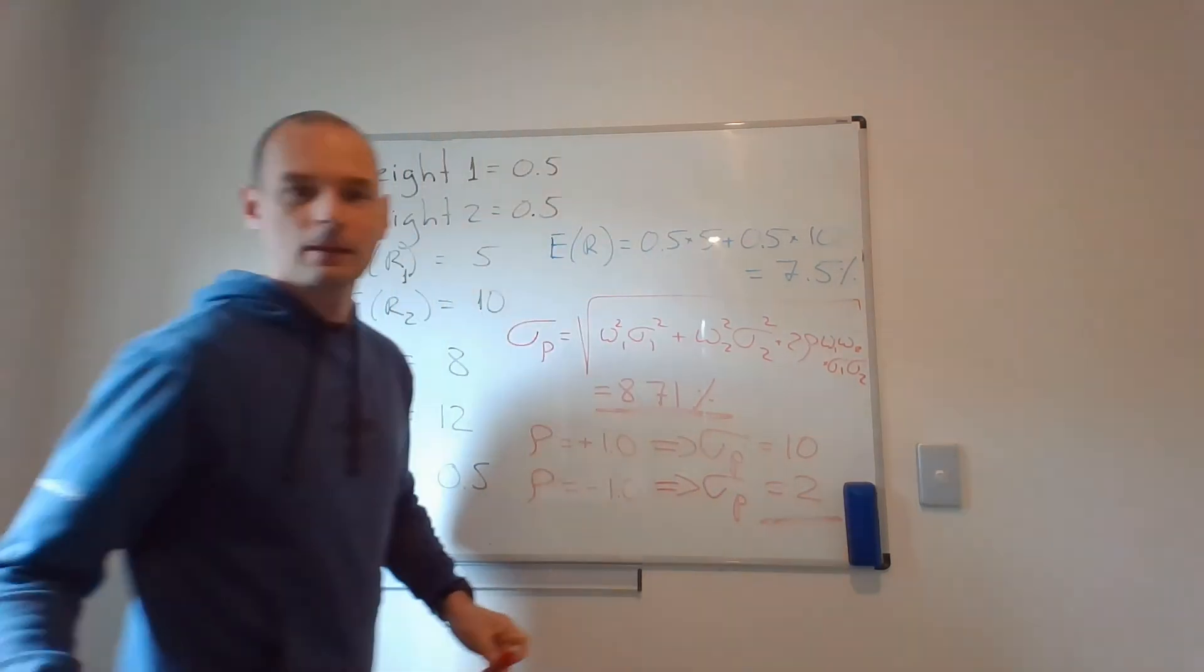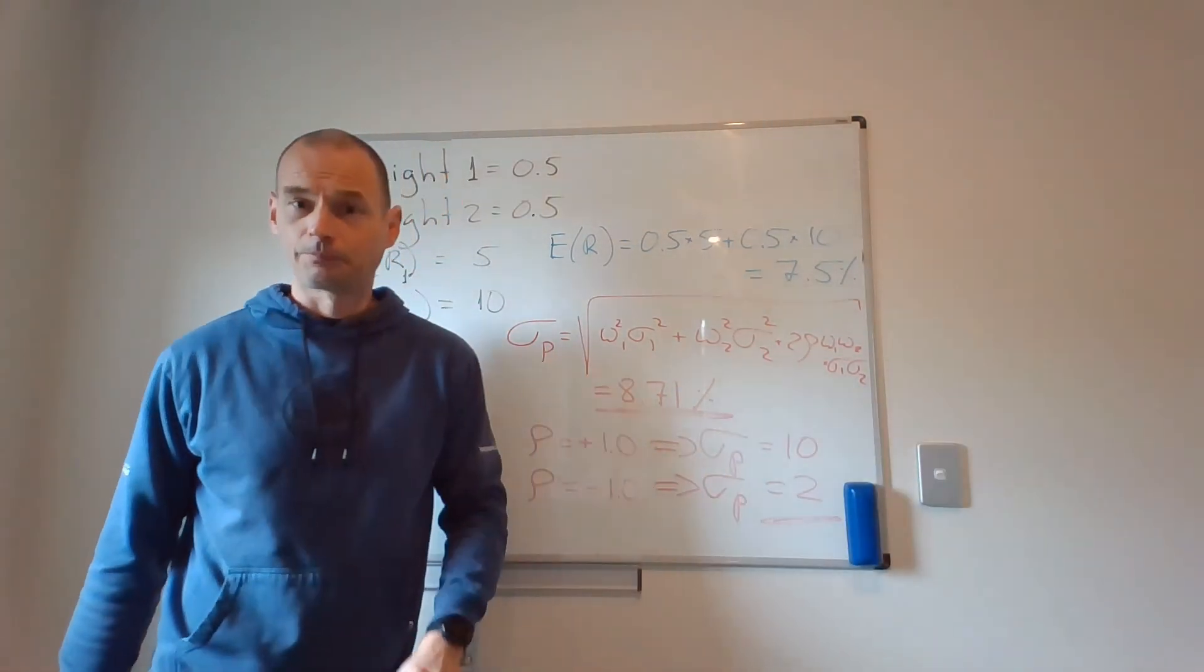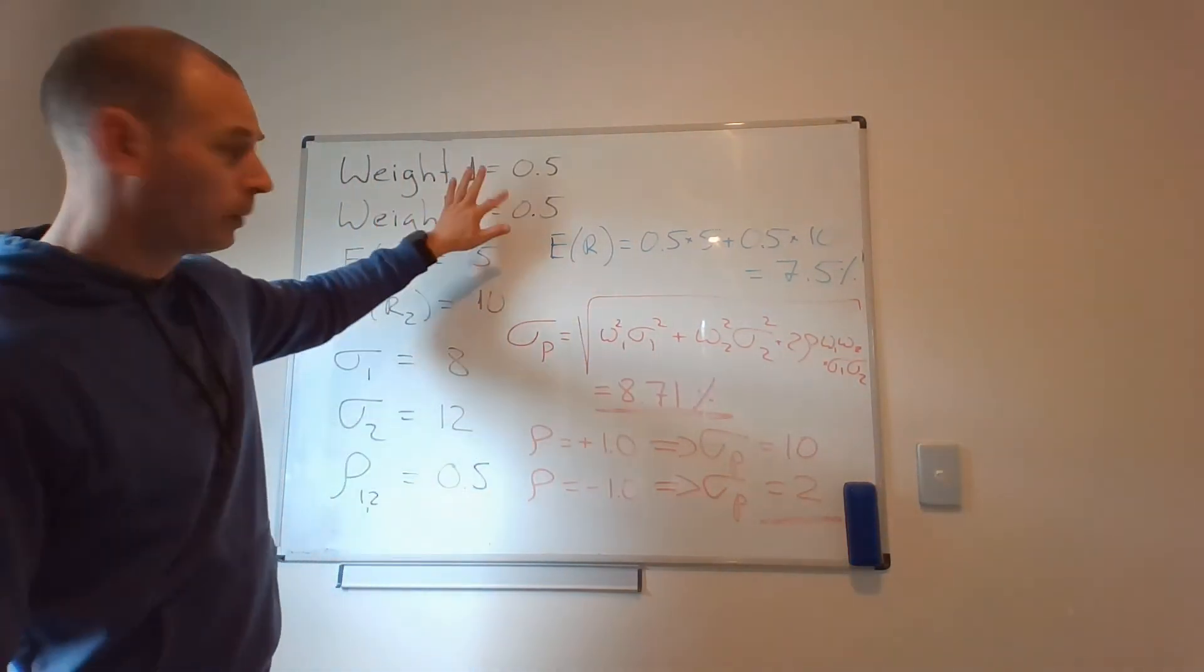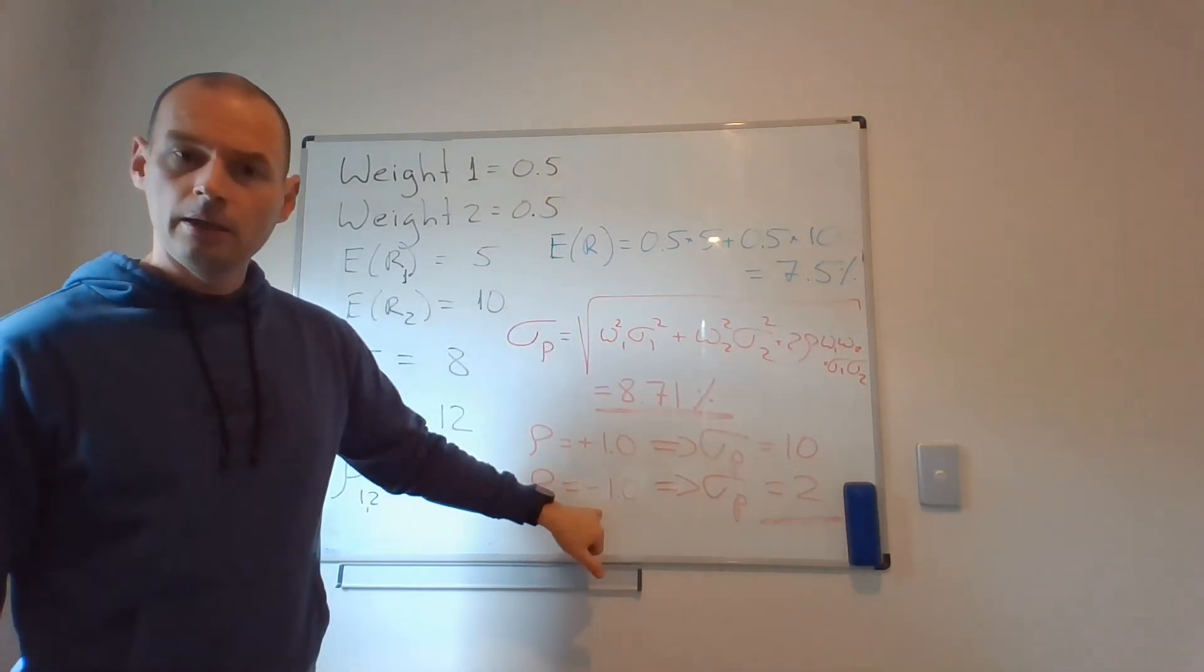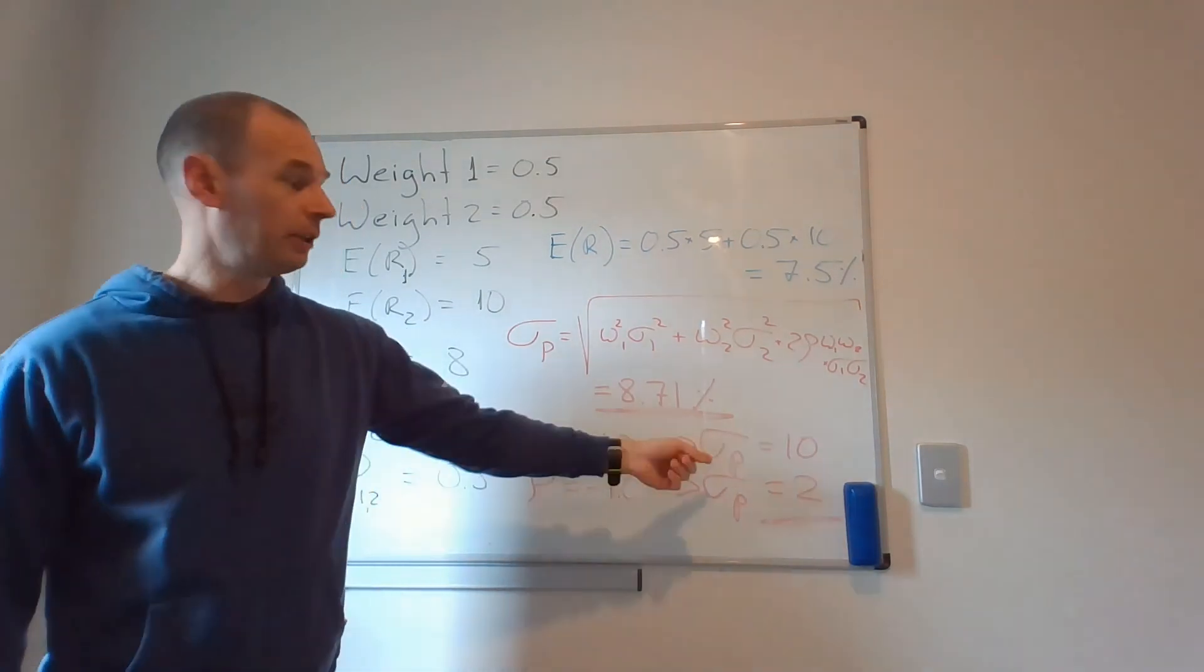2. You see how low my standard deviation is. 2. If I play with these weights, there is a formula. When my correlation coefficient is minus 1, it's actually possible to get my standard deviation to 0. We're not going to bother with that in this video.